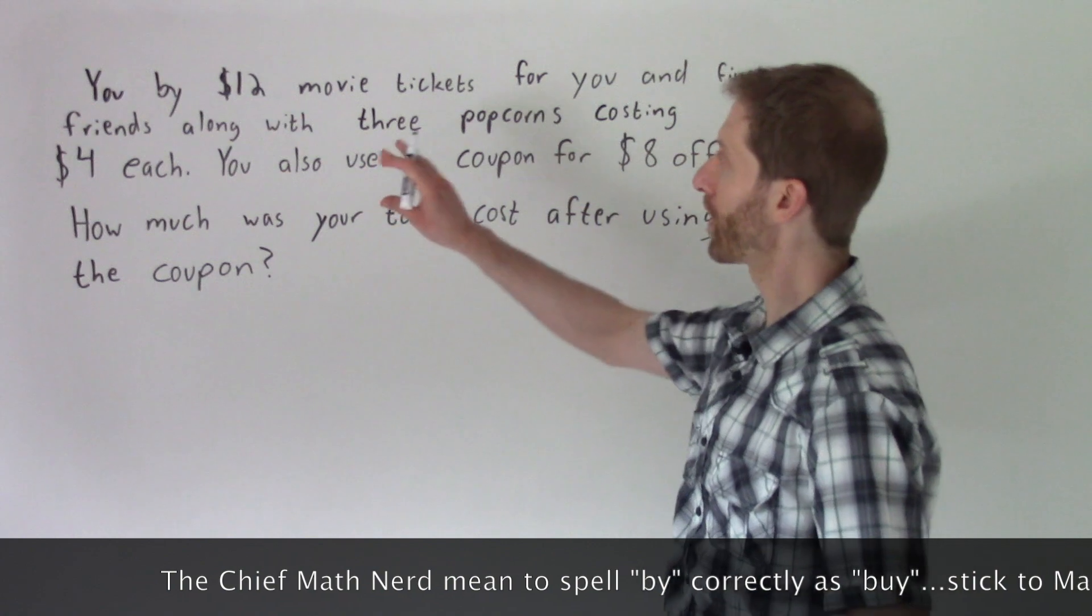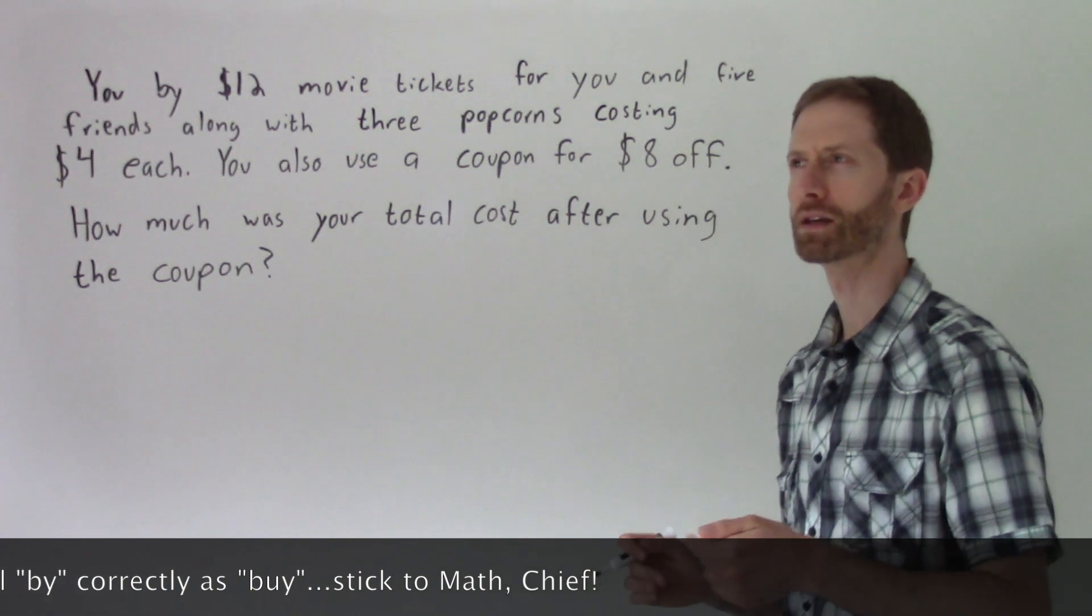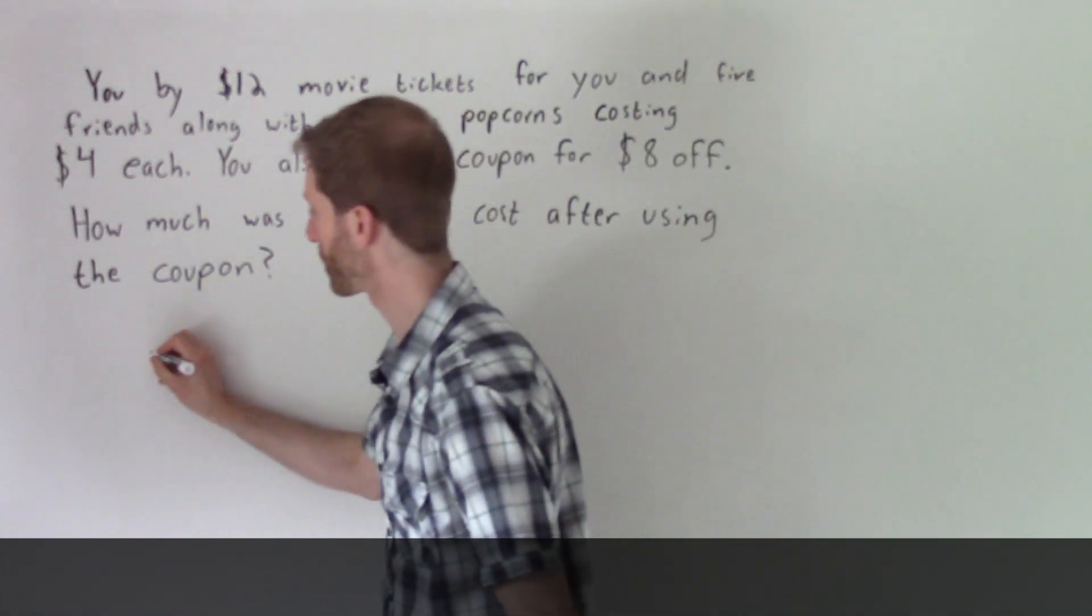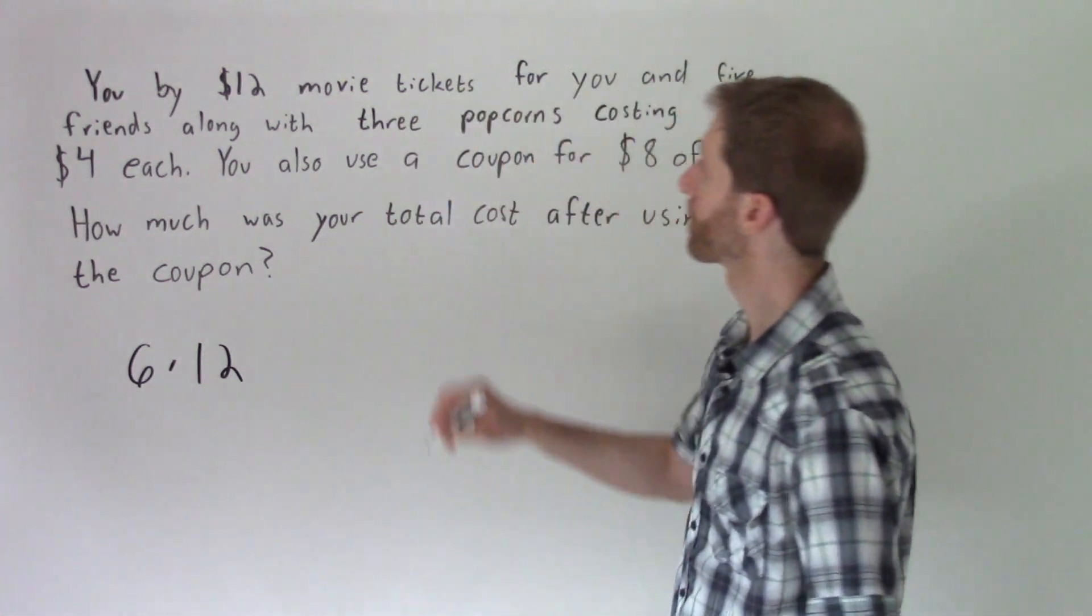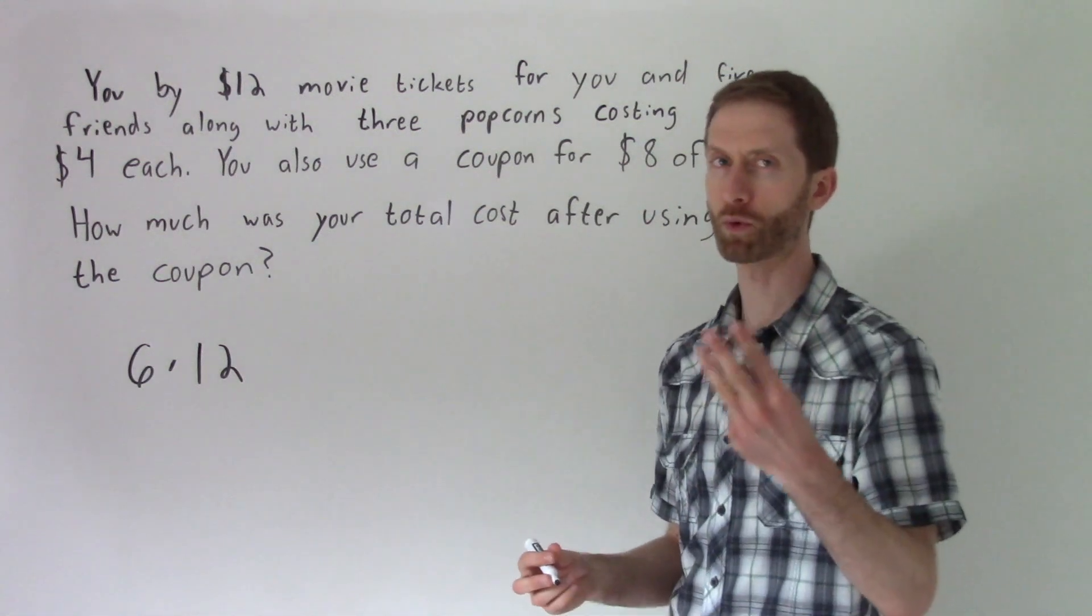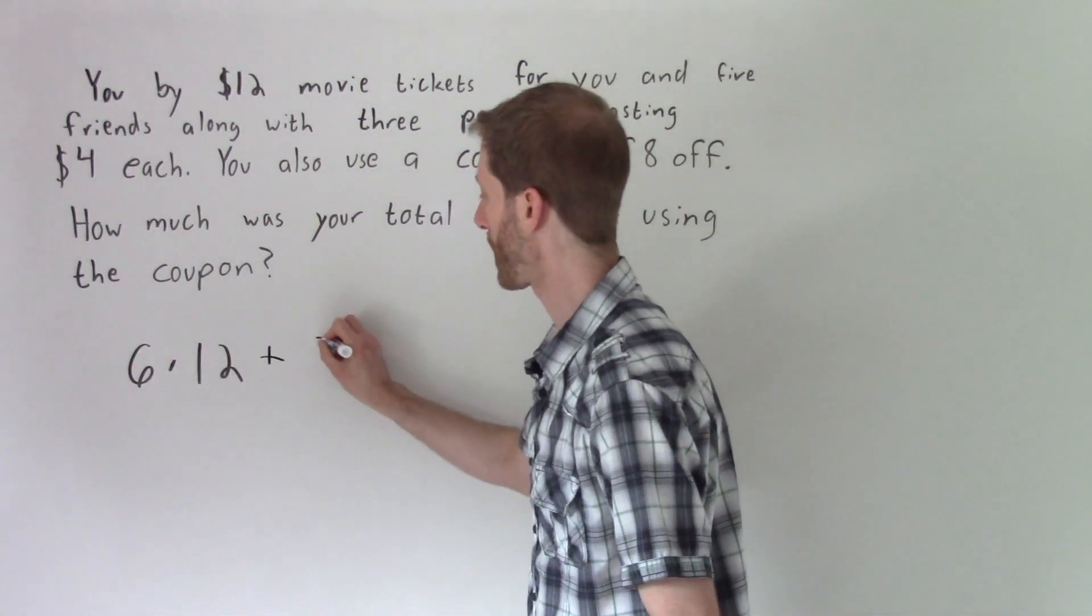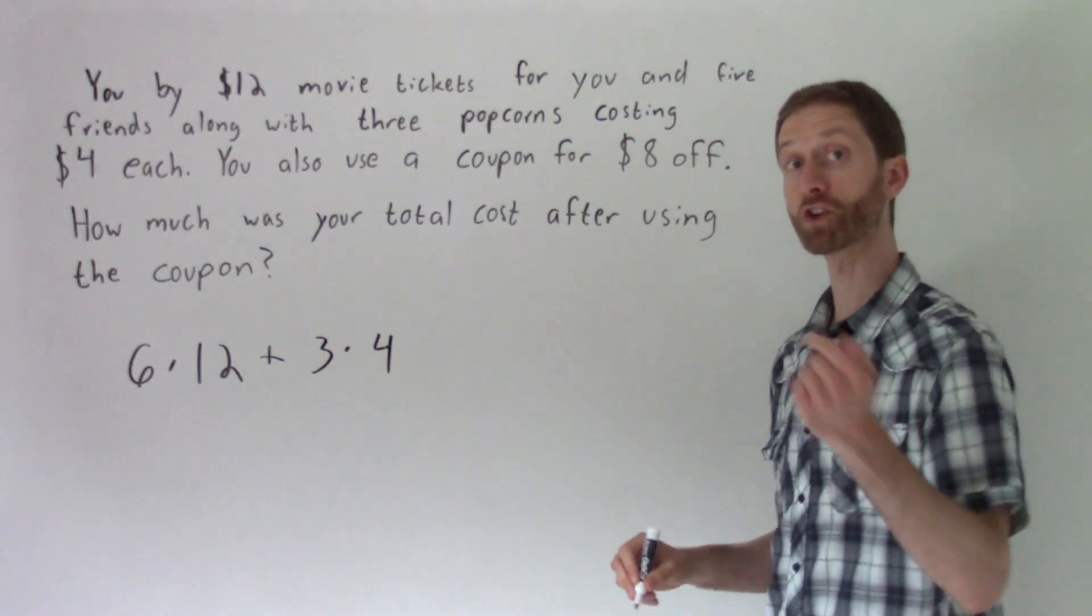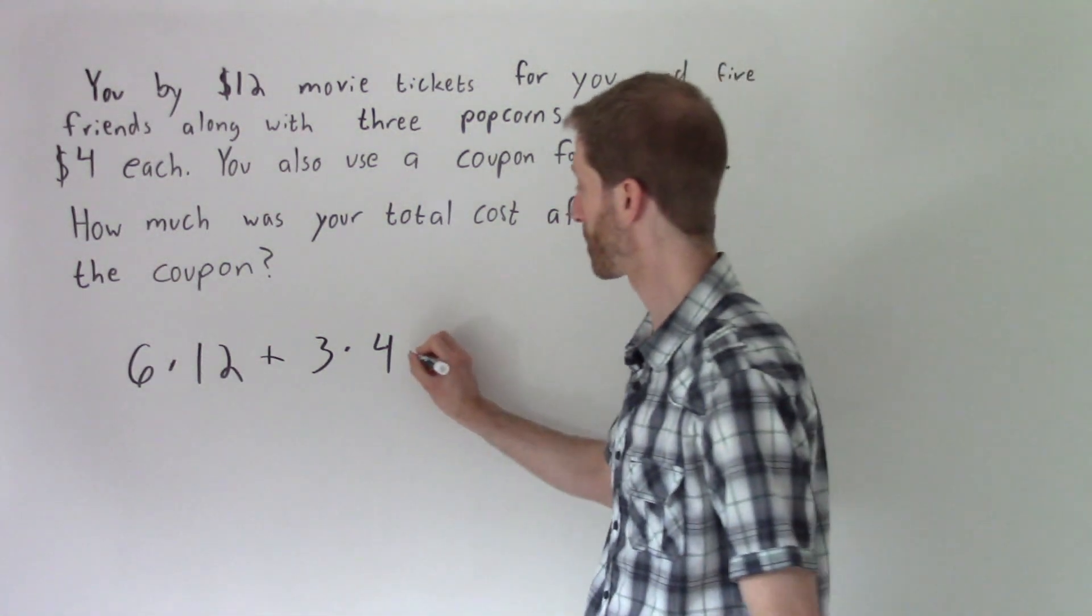So this says, you buy $12 movie tickets for you and five friends. So right away, I stop there and think, me and five friends order movie tickets. So that's six total people at $12 each. So that's going to be six times $12, along with three popcorns costing $4 each. So that's three popcorns at $4 each. So that's going to be in addition to the money we spent here, three popcorns at $4 each. Then it says you also use a coupon for $8 off. Well, if we're applying the coupon, we would be subtracting $8 from the money that we just spent. So minus eight.